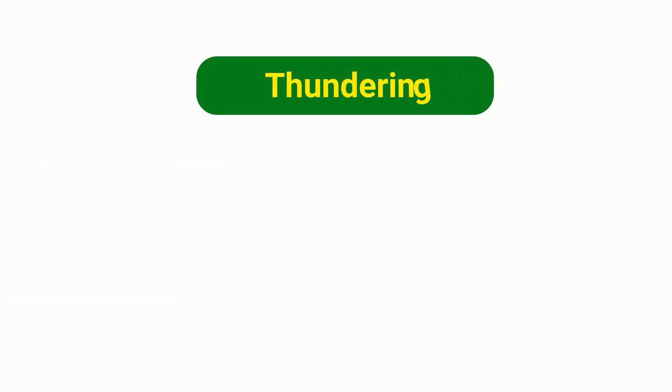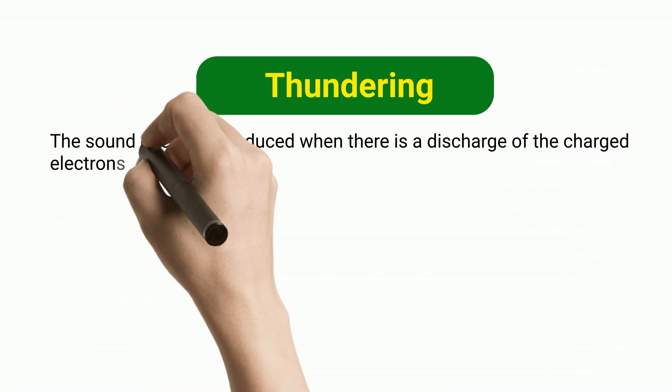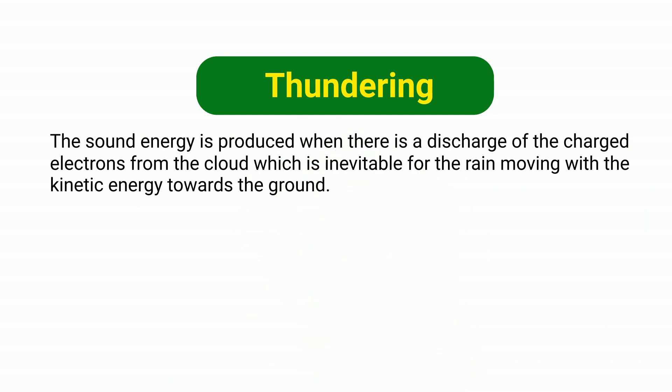Thundering. The sound energy is produced when there is a discharge of the charged electrons from the cloud which is inevitable for the rain moving with the kinetic energy towards the ground.